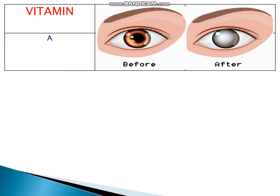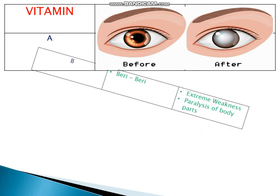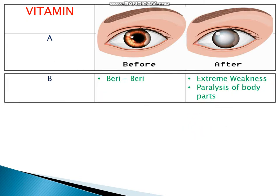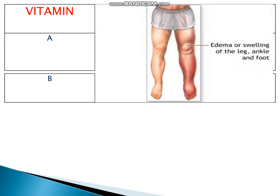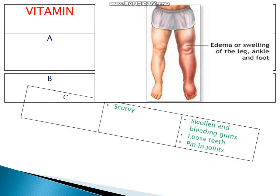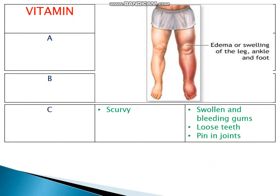Deficiency of vitamin B causes beriberi, which shows symptoms like extreme weakness and paralysis of the body parts. Deficiency of vitamin C causes scurvy, which shows symptoms like swollen and bleeding gums, loose teeth, and pain in joints.